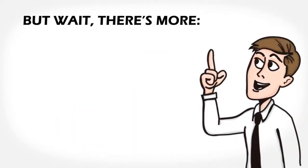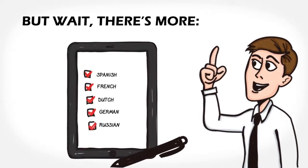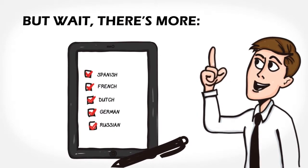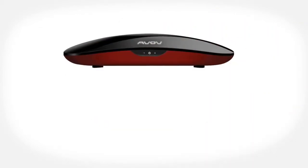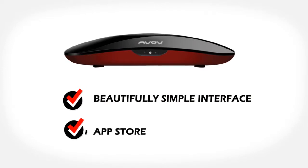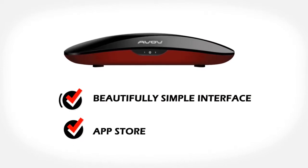But wait, there's more! You also get subtitles in over 50 languages, and this box can pretty much find any channel in the world. The Evov Vixo 2 box also has a beautifully simple interface and app store.